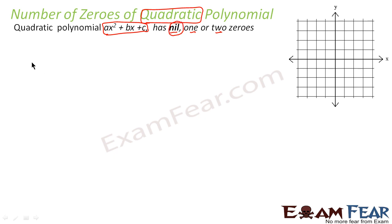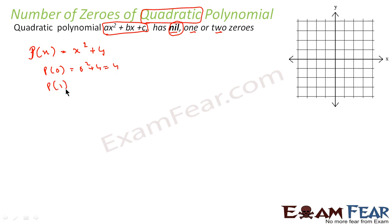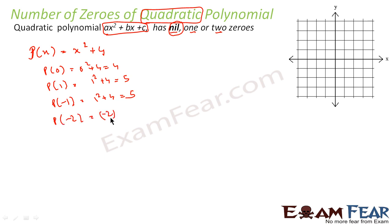Let's take this scenario: p(x) = x² + 4. Let's plot this diagram. P(0) = 0² + 4 = 4. P(1) = 1² + 4 = 5. P(-1) = (-1)² + 4 = 5. P(-2) = (-2)² + 4 = 4 + 4 = 8. P(2) = 2² + 4 = 8.